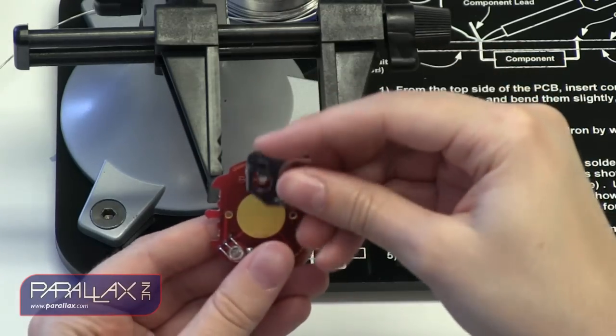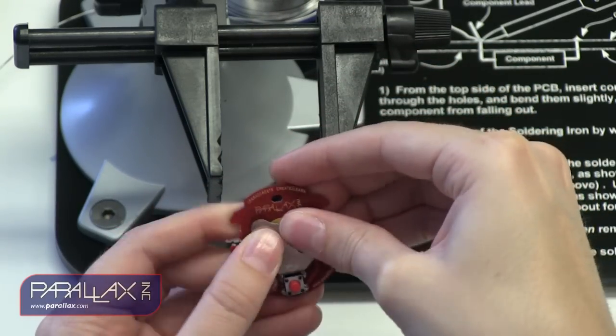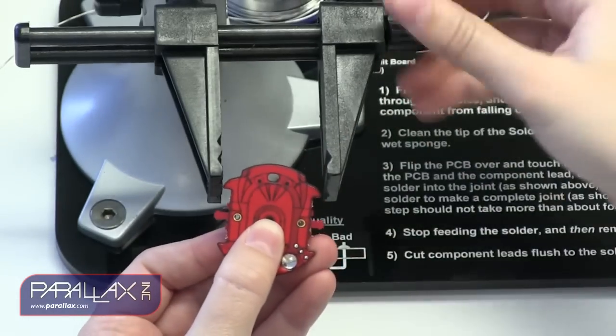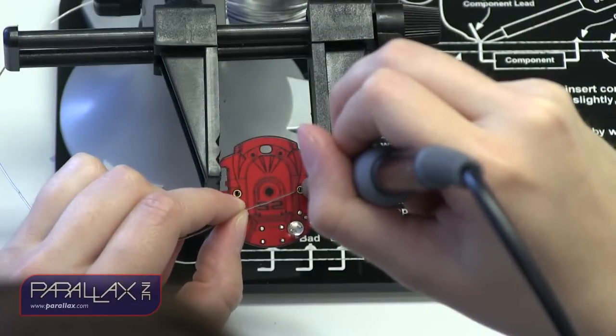The last part we'll need to solder is the battery holder. Insert the holder onto the bottom side of the board, making sure the open end is facing forward. Flip the board over and then solder the tabs.